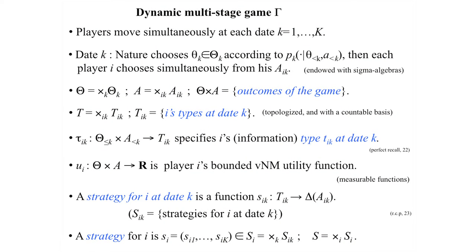A strategy for player I at date K is a measurable function mapping your type into a probability distribution over actions. A strategy for player I in the whole game is a vector of strategies for each date K. A strategy profile is a collective vector of those, one for each player. Given the measurability structure, strategies determine well-defined expected payoffs, so we have a well-defined game.